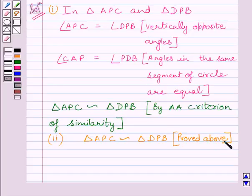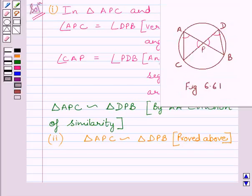We also know that in case of two similar triangles, the ratio of their corresponding sides are equal. So we can write AP upon DP is equal to CP upon PB.